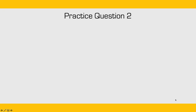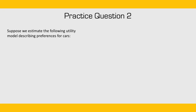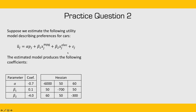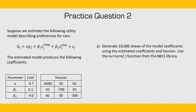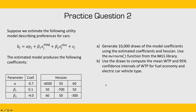Let's do some more practice questions using simulation. Suppose we estimate the same utility model as in the previous practice question, and the estimated model produces coefficients along with a Hessian matrix at the solution. For Part A, generate 10,000 draws of the model coefficients using these estimated coefficients and the Hessian — use the MVRNorm function from the mass library. For Part B, use these draws to compute the mean willingness to pay and a 95% confidence interval for fuel economy and the electric car vehicle type.